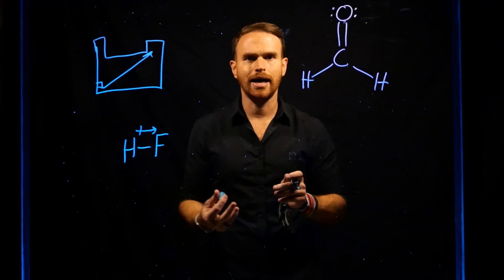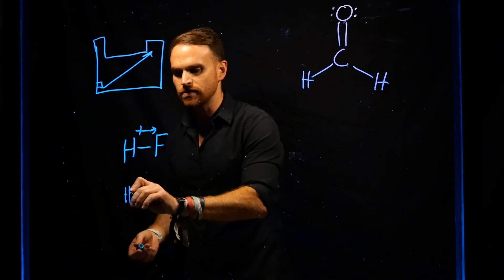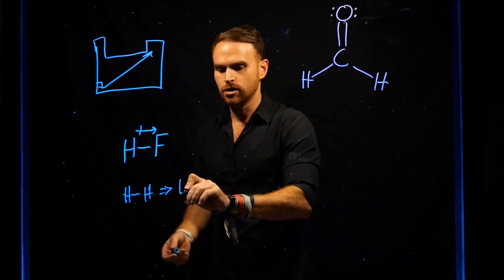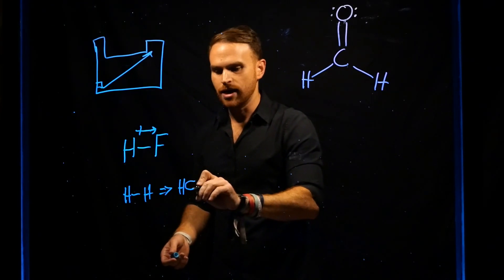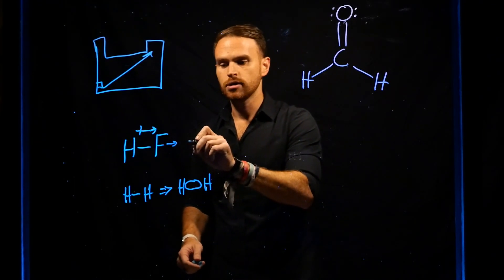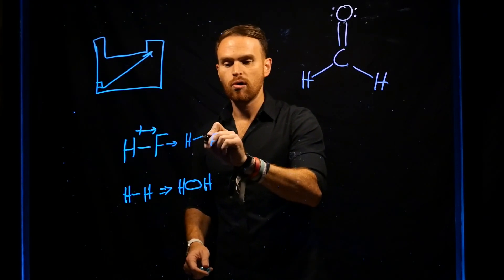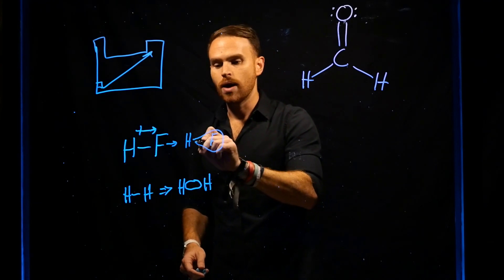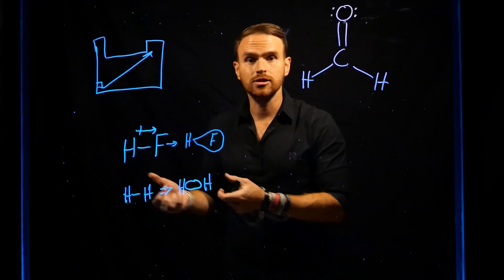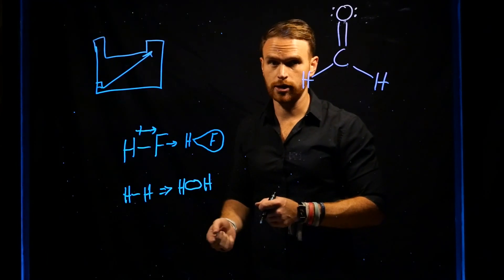If we looked at the electron cloud density of HH, we would see an even distribution of electrons between those two atoms. However, if you looked at something like HF, you would see much more electron density around the fluorine than around the hydrogen, because fluorine is more electronegative and is pulling the electrons closer to itself.